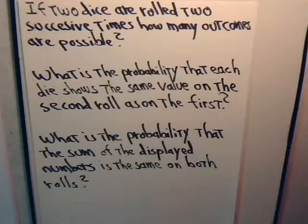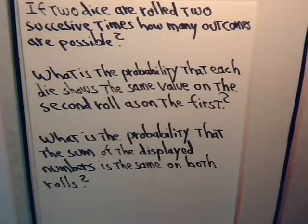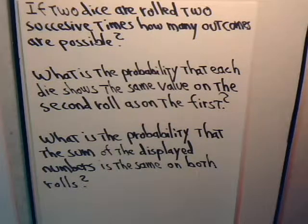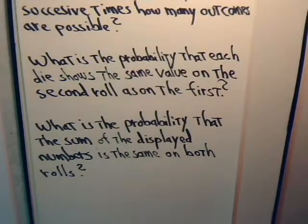In this video we want to consider some more basic counting problems, and we have three of them. The first one reads: if two dice are rolled two successive times, how many outcomes are possible? The second question is: what is the probability that each die shows the same value on the second roll as on the first roll? And finally, what is the probability that the sum of the displayed numbers is the same on both rolls?